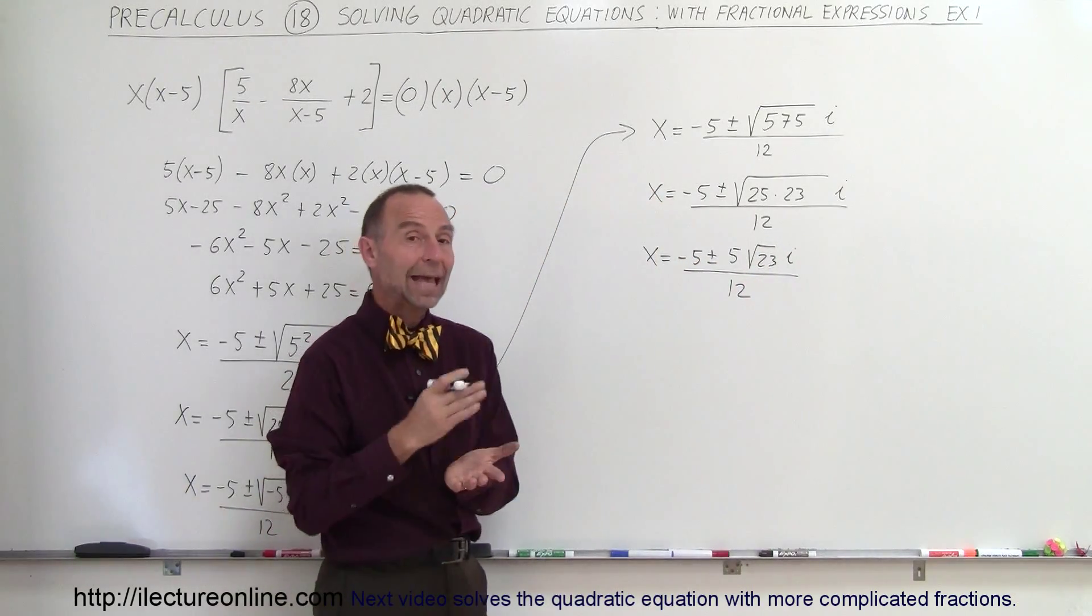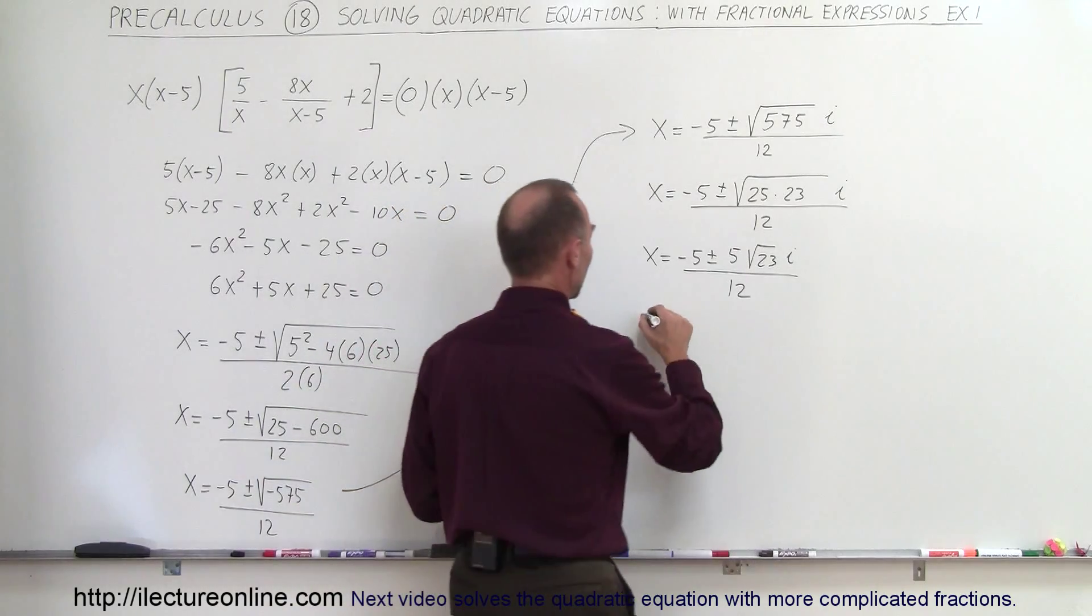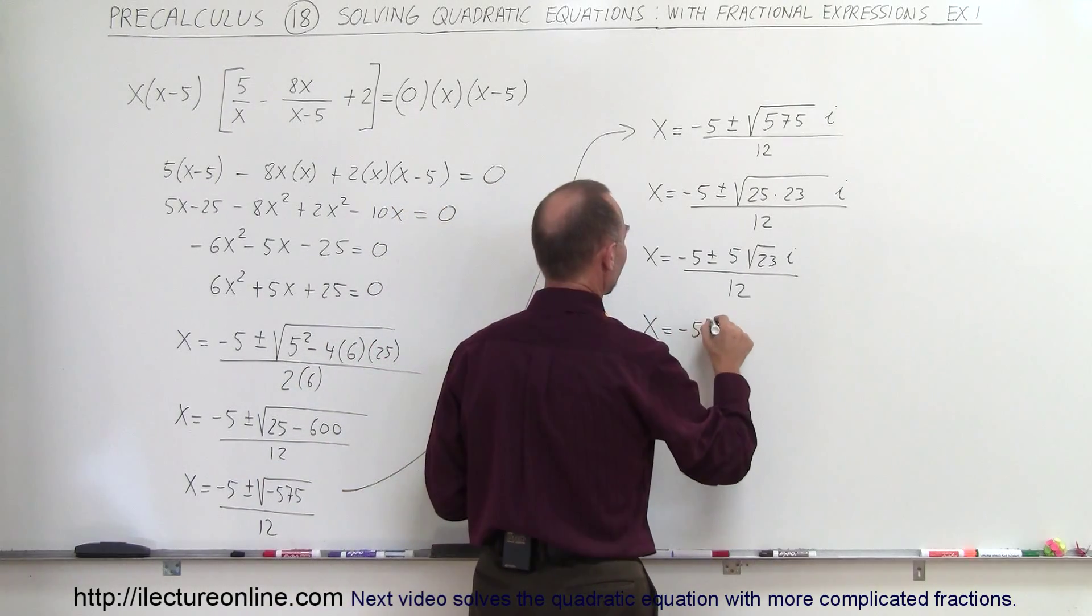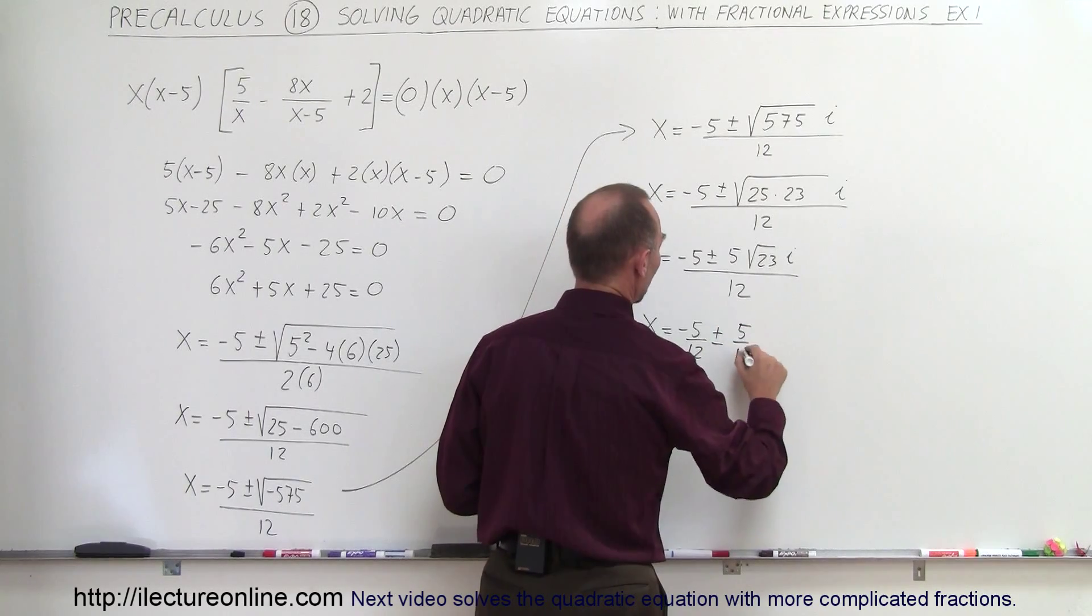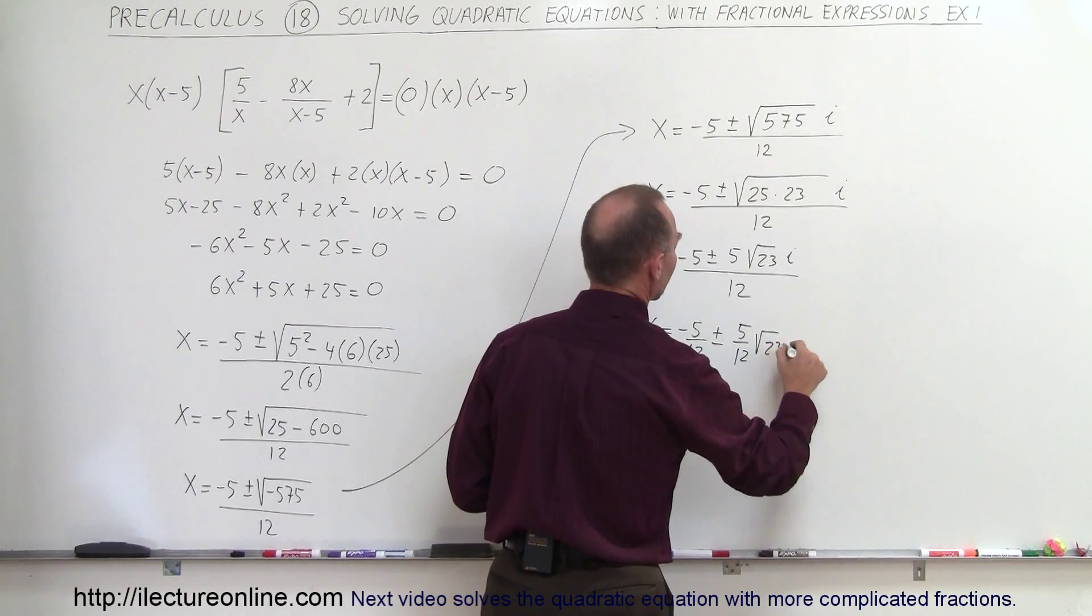And of course, the proper way of writing this would be in the a plus bi format, so x is equal to minus 5 over 12, plus or minus 5 over 12 times the square root of 23, times i.